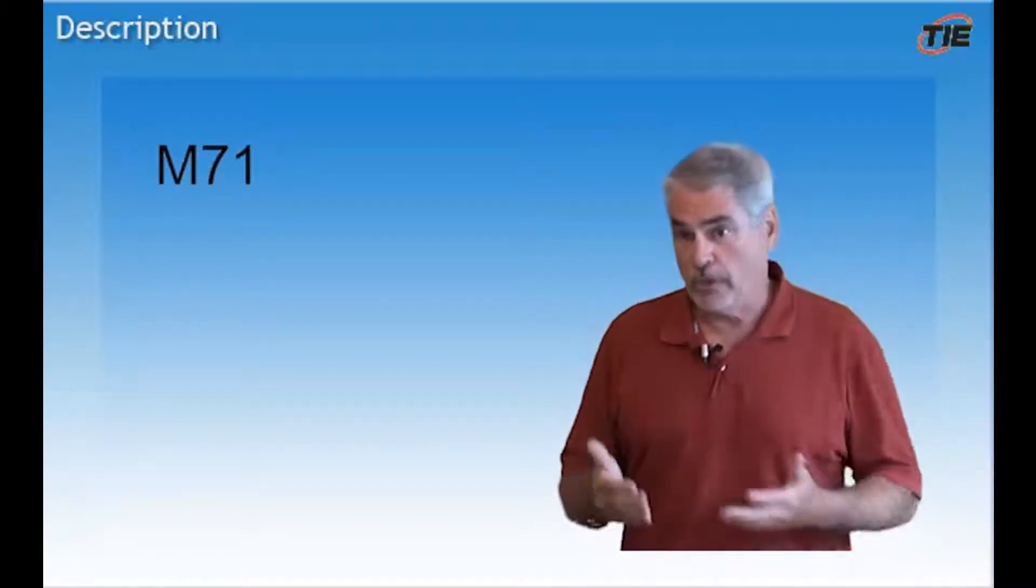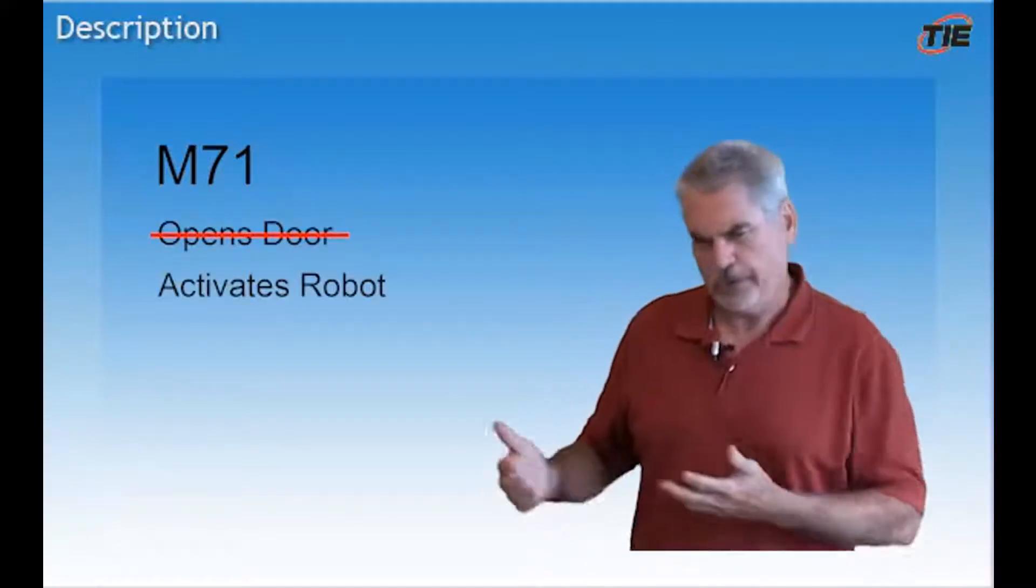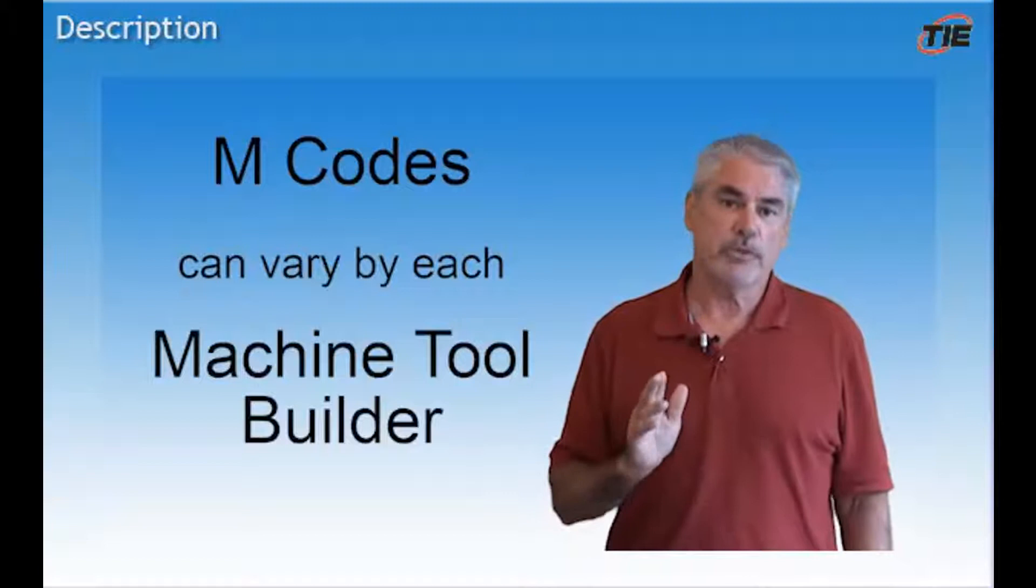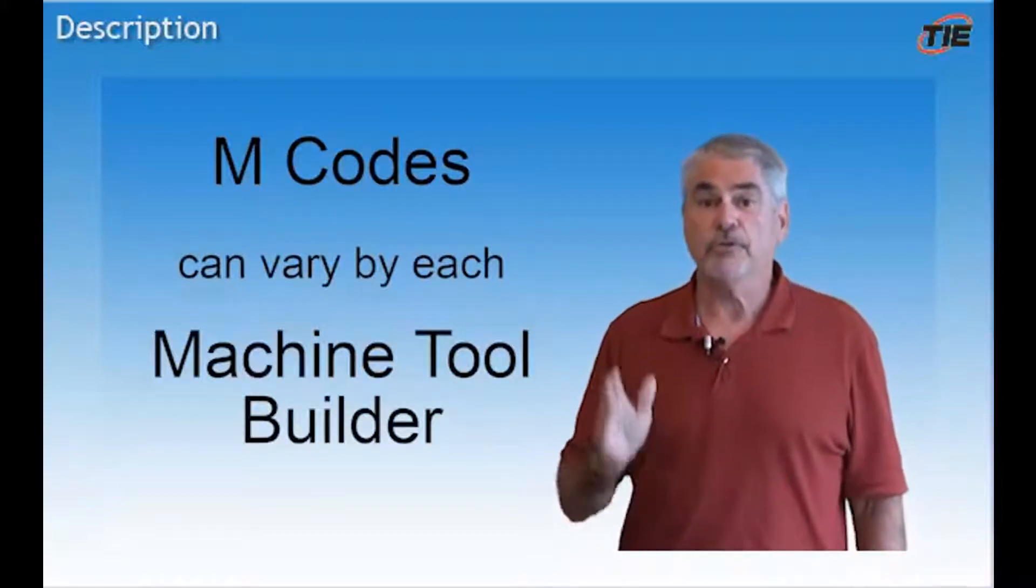The problem is that after the first 30, there is no standardization. For instance, M71. What's M71 do? Well, on this machine, it opens the door. On that machine, it activates the robot. Well, on this machine over here, M71 starts the indexer. That's why when you're dealing with M codes, you have to use M codes with caution because they will not be the same from machine builder to machine builder.